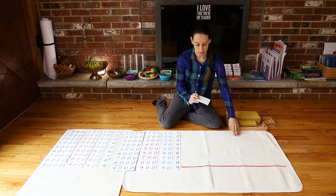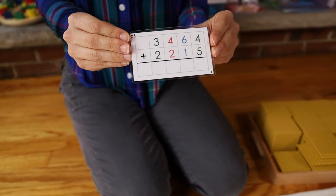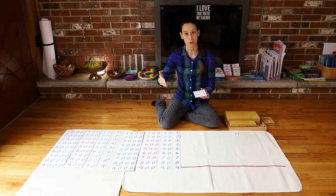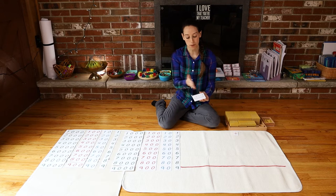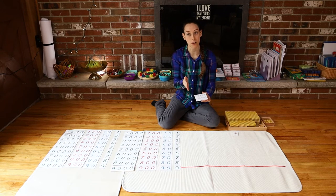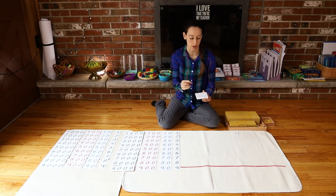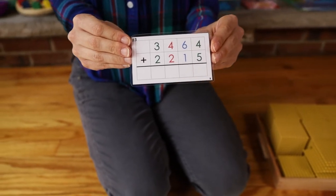So here I have my equation. Now when doing addition, we'd go from units to thousands. But when they're setting up the equation, I like to start with the thousands because that's how we read the number. Three thousand four hundred sixty four.